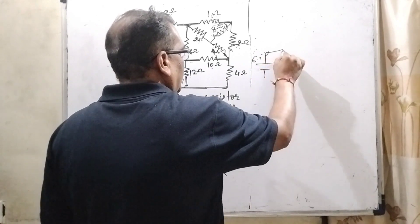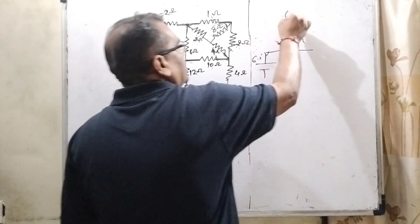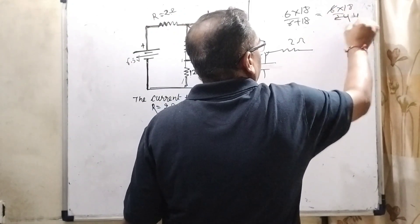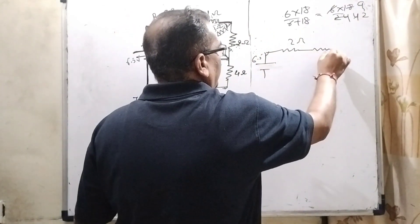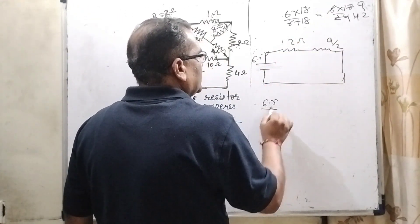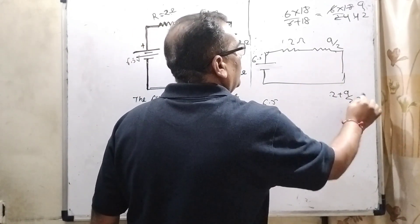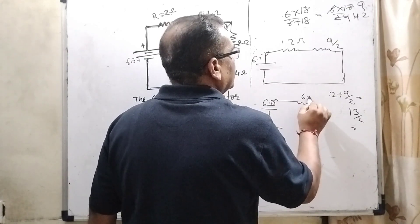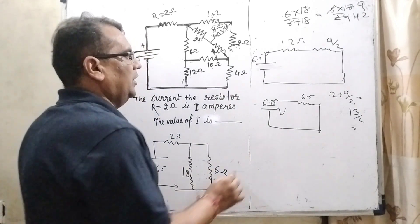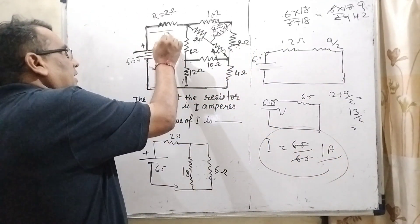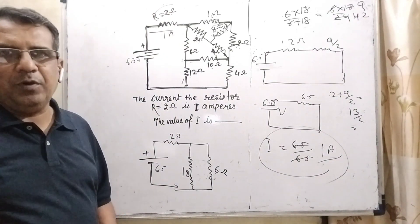We have 6.5 volts, a 2 ohm resistance, and 6 ohm parallel with 18 ohm: (6 × 18) / (6 + 18) = 108 / 24 = 9/2 ohm. These are in series, so total resistance = 2 + 9/2 = 4/2 + 9/2 = 13/2 = 6.5 ohm. Therefore, current I = 6.5 / 6.5 = 1 ampere passing through the 2 ohm resistor. I hope you understood this problem.